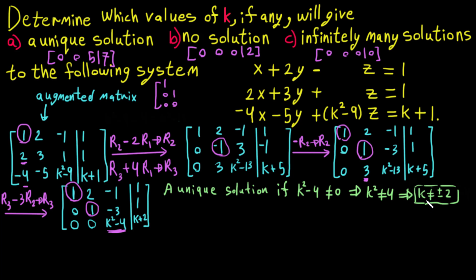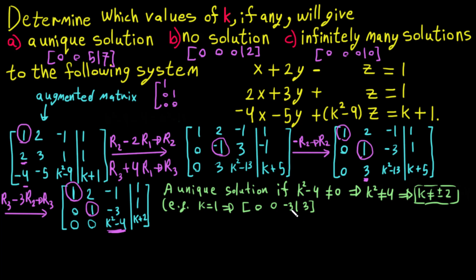For example, if K equals 1, the last row becomes [0, 0, negative 3 | 3]. You can divide by 3, multiply by negative 1, and get a leading 1 — so we have leading 1, leading 1, leading 1, confirming a unique solution.